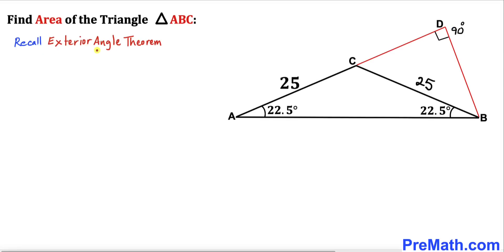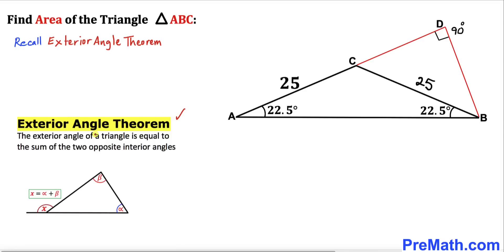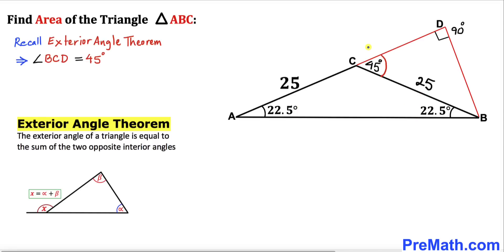Now let's recall the exterior angle theorem: the exterior angle of a triangle is equal to the sum of the two opposite interior angles. In our case, angle BCD is the exterior angle, and it equals the sum of the two opposite interior angles — angle A and angle B — so angle BCD is 45 degrees.